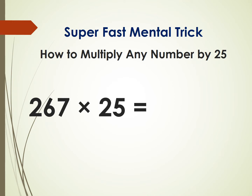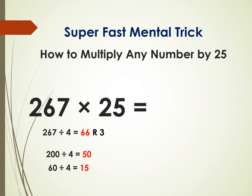Another example: 267 times 25. First, we need to divide 267 by 4, but that is not divisible by 4. Just take a look at 67 — 67 is not divisible by 4 either. So we need to find the smaller number that is divisible by 4, and that is 264. 264 divided by 4 is 66 — because 200 divided by 4 is 50, 60 divided by 4 is 15, and 4 divided by 4 is 1, giving 66. The remainder when dividing 267 by 4 is 3, so write 66 and then write 75 in front of it. The answer is 6,675.